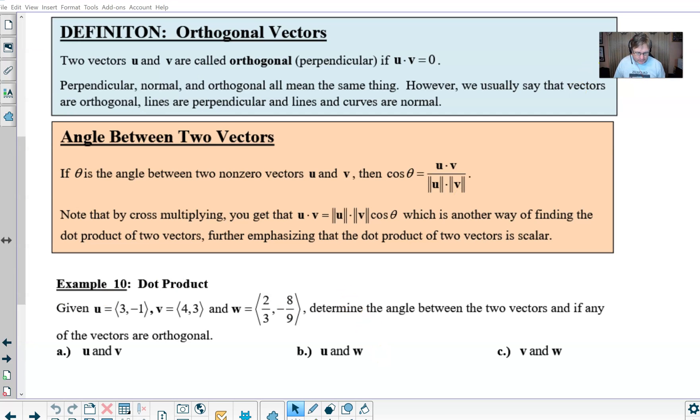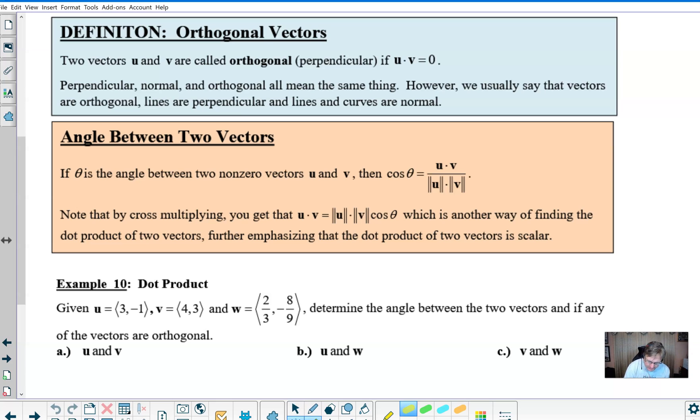So what we've got here is the definition of what an orthogonal vector is. Two vectors are orthogonal if their dot product is zero. Another way to think of orthogonal is indeed the word perpendicular. Often we see all of these words: perpendicular, common, normal, and orthogonal, and they essentially all mean the same thing, perpendicular relationships. The words are just used in different environments.